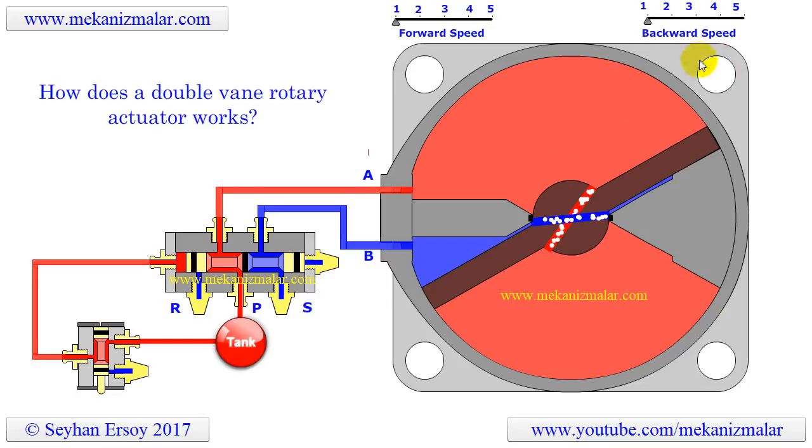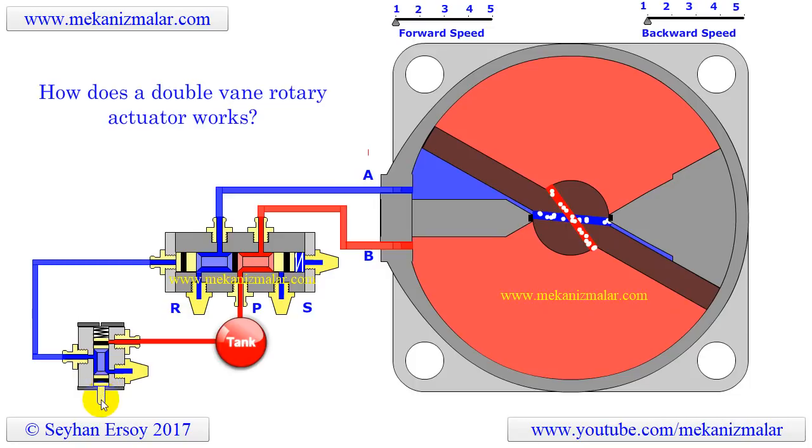A double-vane rotary actuator has an almost identical working principle to the single-vane rotary actuator. The one big difference is that there are four chambers inside the double-acting rotary actuator, whereas there are two chambers inside the single-acting rotary actuators.